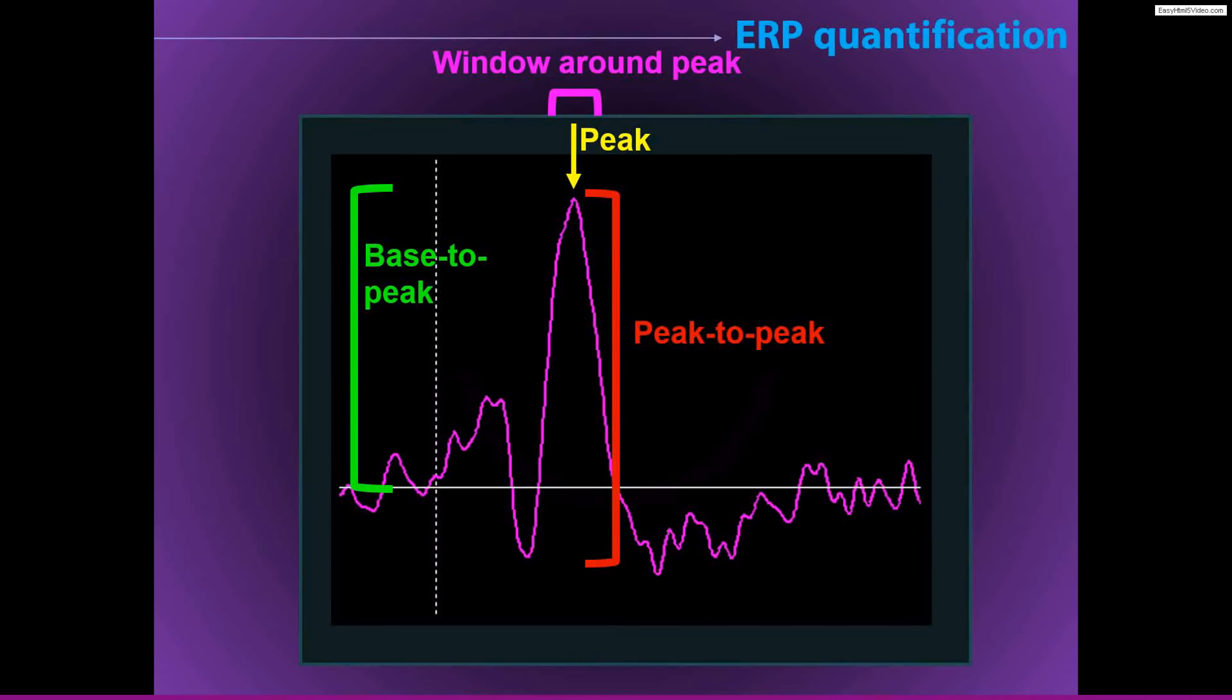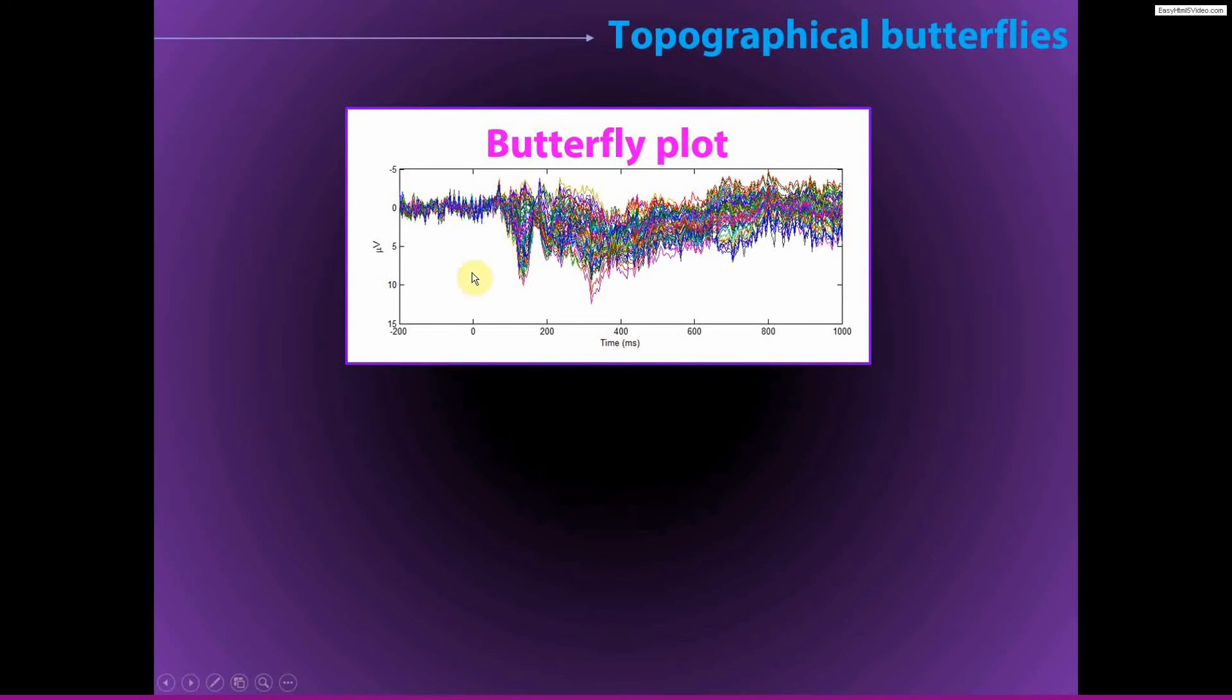So this is the ERP just from one single channel. Here you see the ERP plotted from all of the channels. So in this data set, we have 64 channels. So there are 64 lines being plotted on top of each other. And this is called a butterfly plot for reasons you can use your imagination to try and understand.